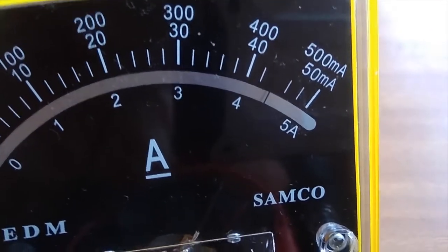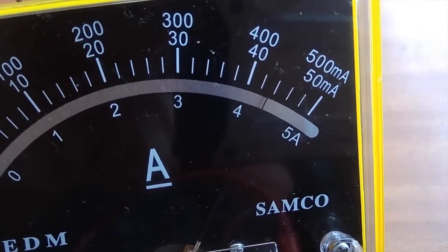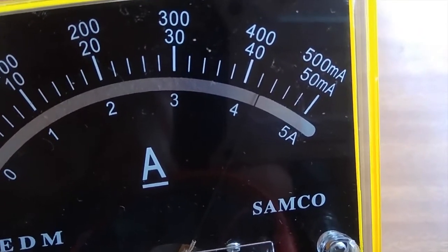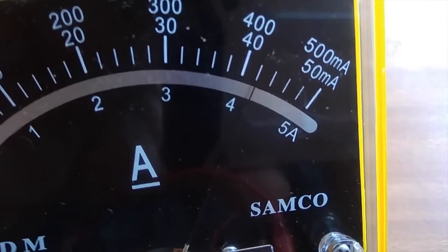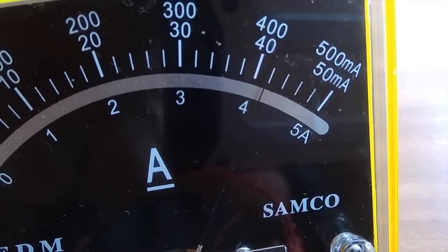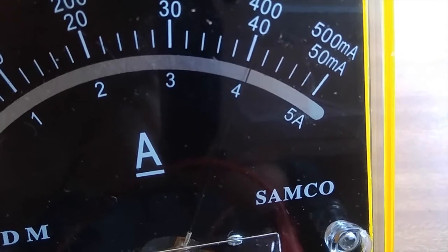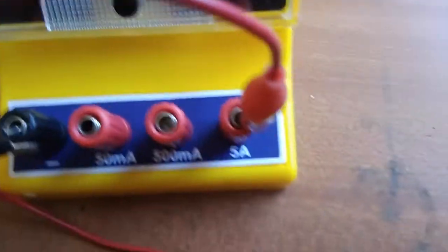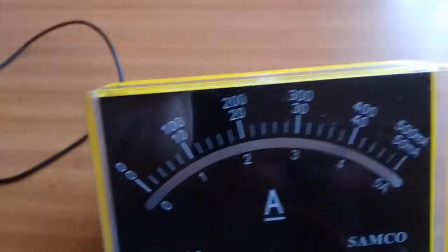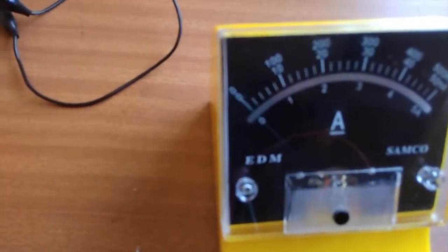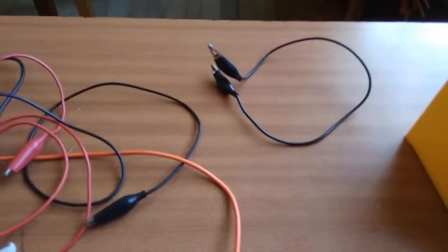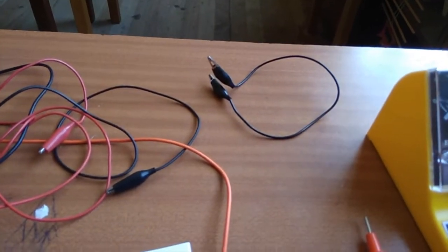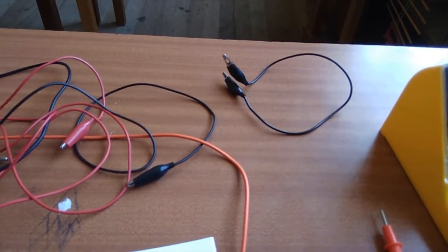But I want us to watch what happens to the ammeter as we short-circuit it. Now we're going to get our maximum current. Watch. Four point, each of those is point, 4.4. It's falling to 4.2, and soon it's going to fall to 4. There, the needle is on 4 on the lowest scale because we've attached it to the 5 amp. So now 4.4. And now I've disconnected it and it's fallen back. So our Imax came to 4.4 amps.